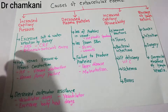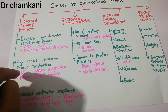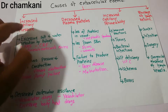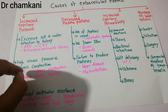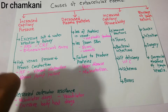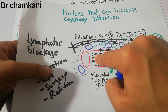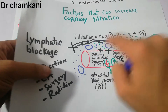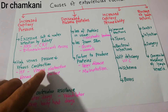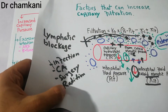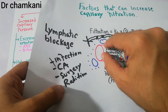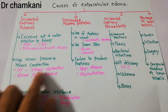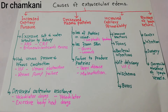Increased capillary pressure can also occur due to high venous pressure and venous constriction. For example, in heart failure, if the heart is unable to pump, fluid will accumulate in the capillary — a lot of fluid will be coming in but will not be going back — so a lot of pressure will develop in the capillaries and fluid will accumulate in the interstitium. Venous obstruction is another cause: if there is obstruction, the pressure in the capillary will increase and fluid will leak out.